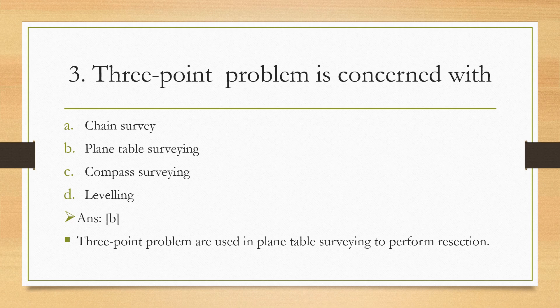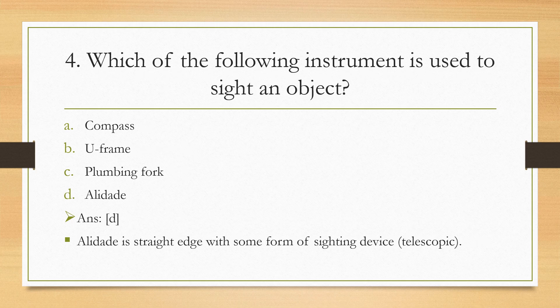Question: Which of the following instrument is used to sight an object? Compass, U-frame, plumbing fork, or alidade? Alidade is used. It is a straight edge with a sighting device, telescopic in nature, which is fixed on the plane table and is used for sighting.